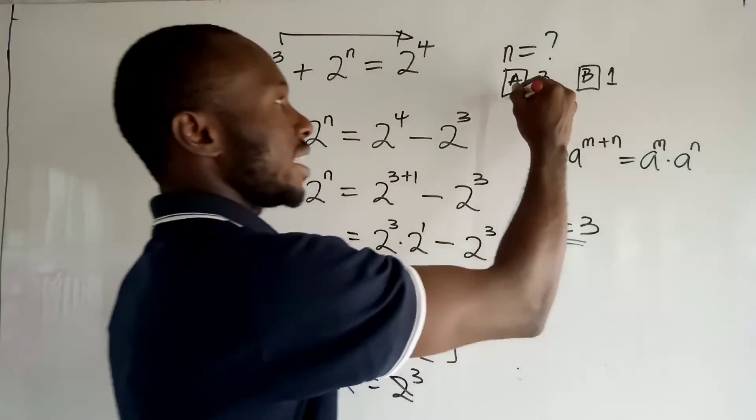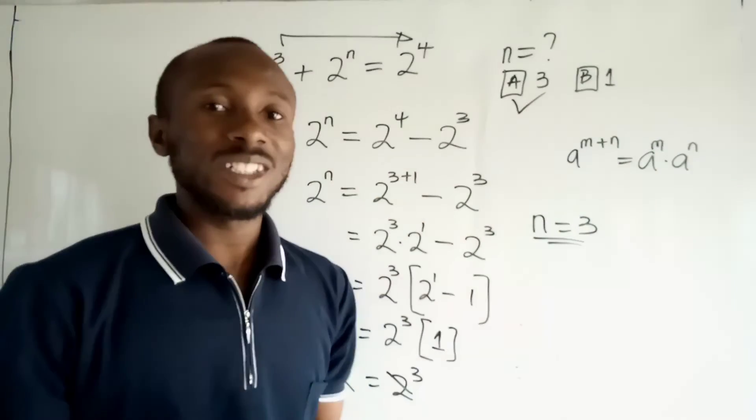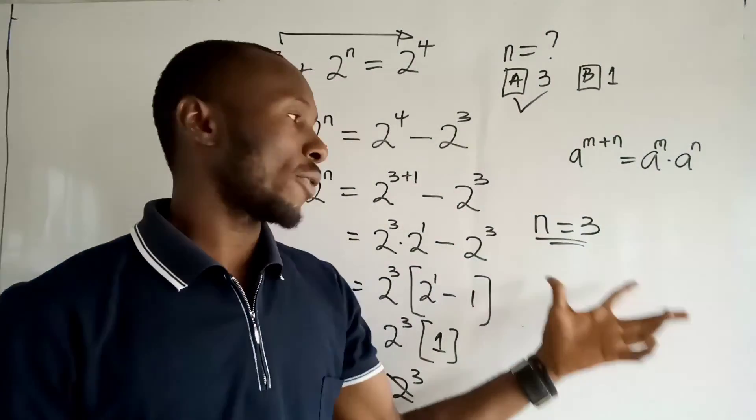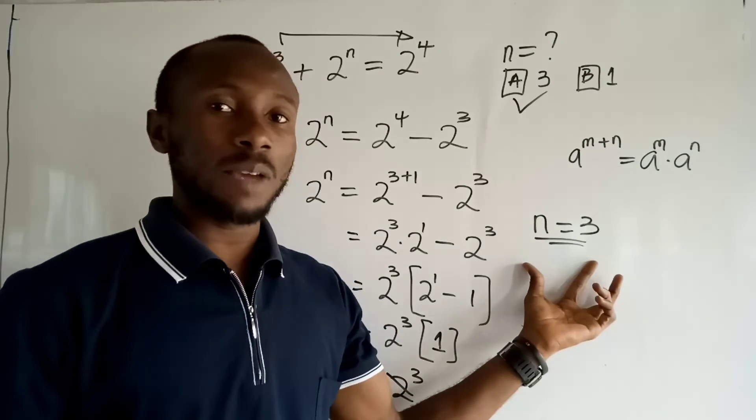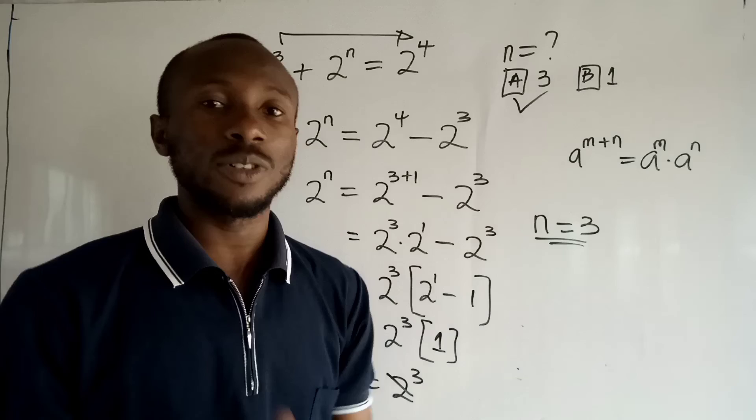So the correct answer is A. If you chose B, well done. And I believe now you know the correct answer. So the value of n is 3. If you love this video, please consider subscribing and sharing the video to other learners. See you in the next tutorial. God bless you. Bye-bye.